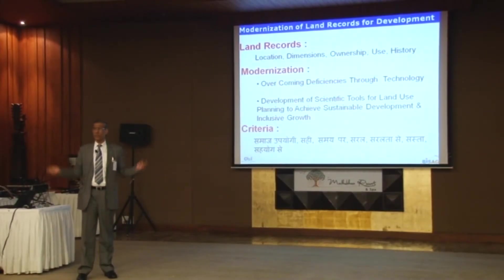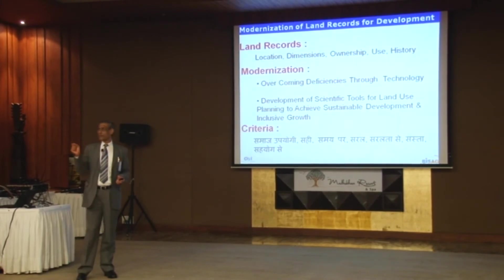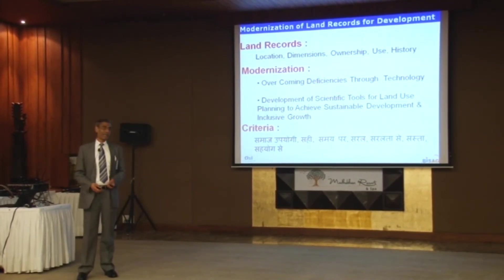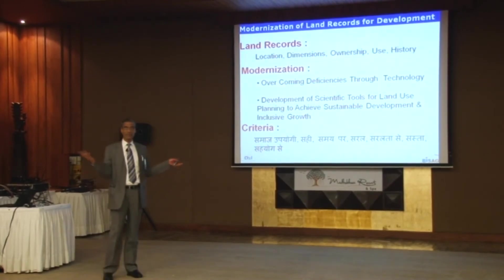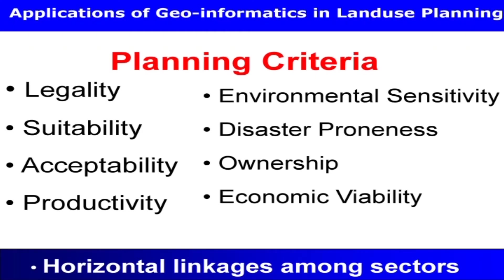Land belongs to a number of people, so just one department doing data collection or integration at one place will not be sufficient. There are a number of legal aspects. We see three things: legality, environmental sensitivity, and productivity. Productivity means double-crop land — today double crop, but tomorrow single-crop land may become three-crop if water is made available. So it is the land potential which is more important than how it is currently utilized.